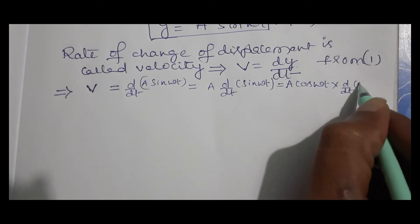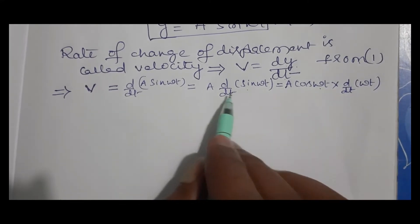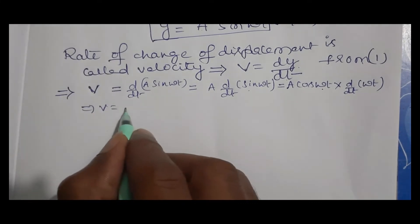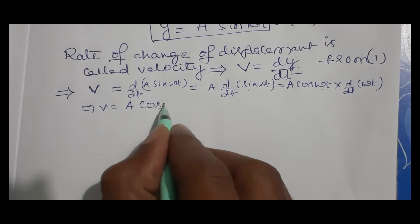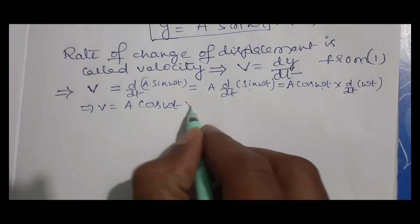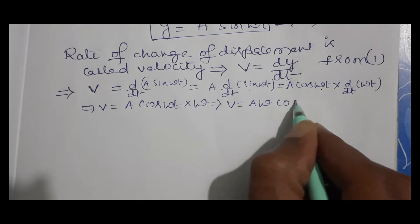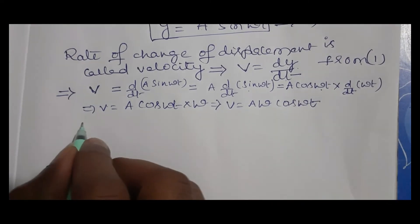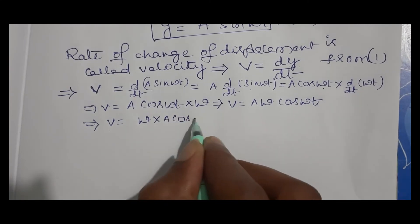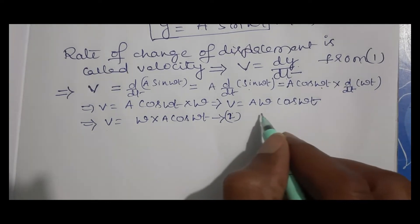Applying the chain rule, d/dt of sin(ωt) gives cos(ωt), and then d/dt of ωt gives omega. Therefore v equals A · cos(ωt) · ω, which simplifies to v equals Aω cos(ωt). This is equation 2.